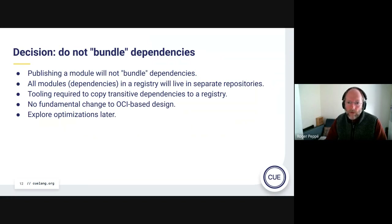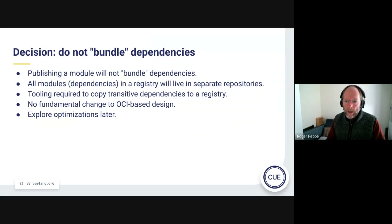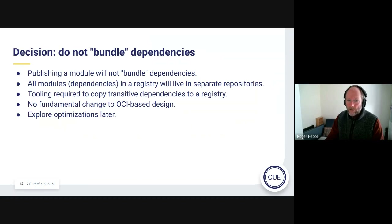So what we've decided — or at least are certainly considering — is that we should not do what was originally proposed. When you publish your module it just publishes exactly the zip file for the module itself. All the dependencies have to be pushed separately for different repositories in that registry. If you want to copy a module from one registry to another, you'll have to copy all the transitive dependencies as well — initially probably explicitly, though there might be some tooling to make that easier.